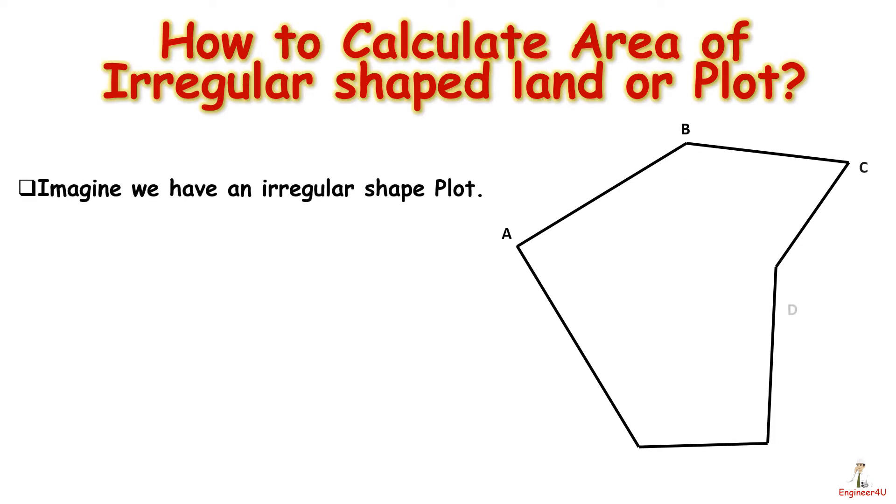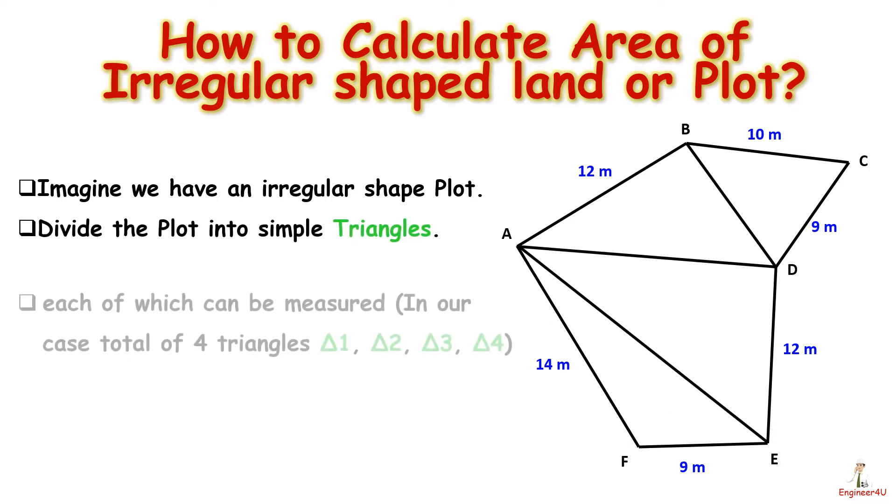Imagine we have an irregular shaped plot. First of all, measure the length of each side of the plot, now divide the plot into simple triangles, each of which can be measured.